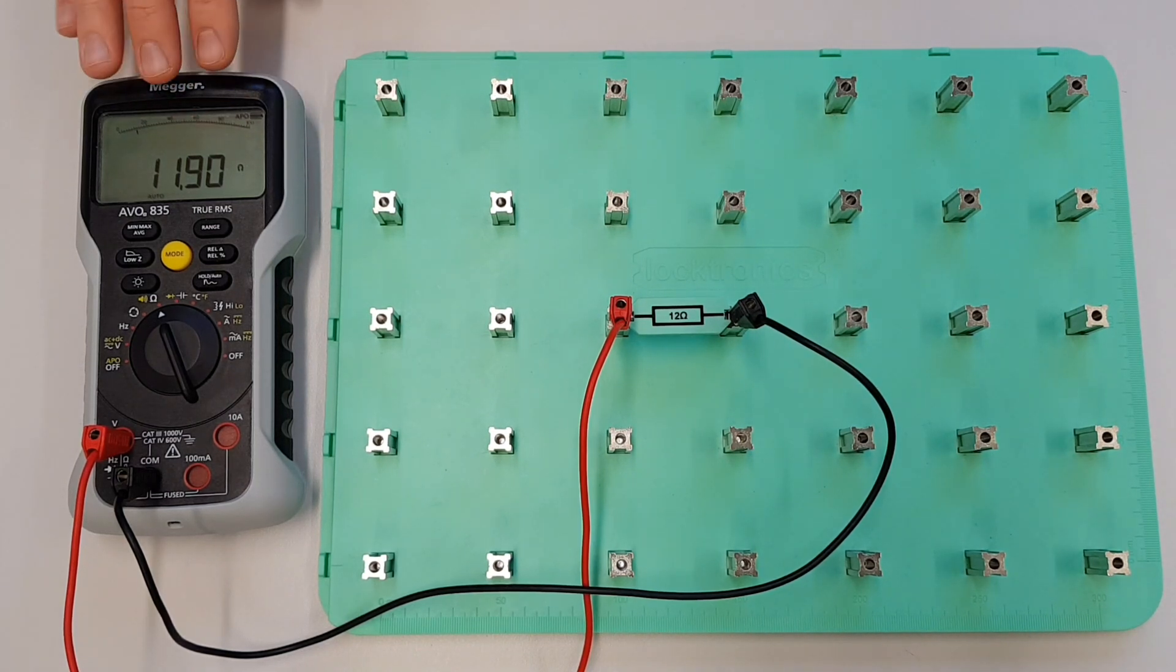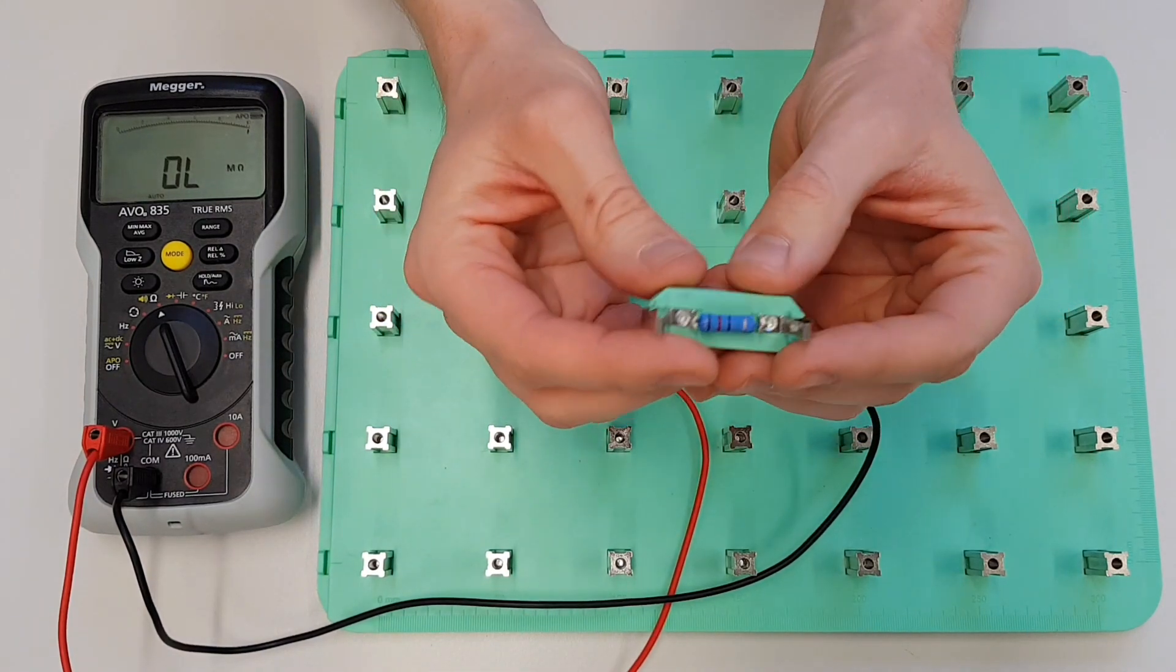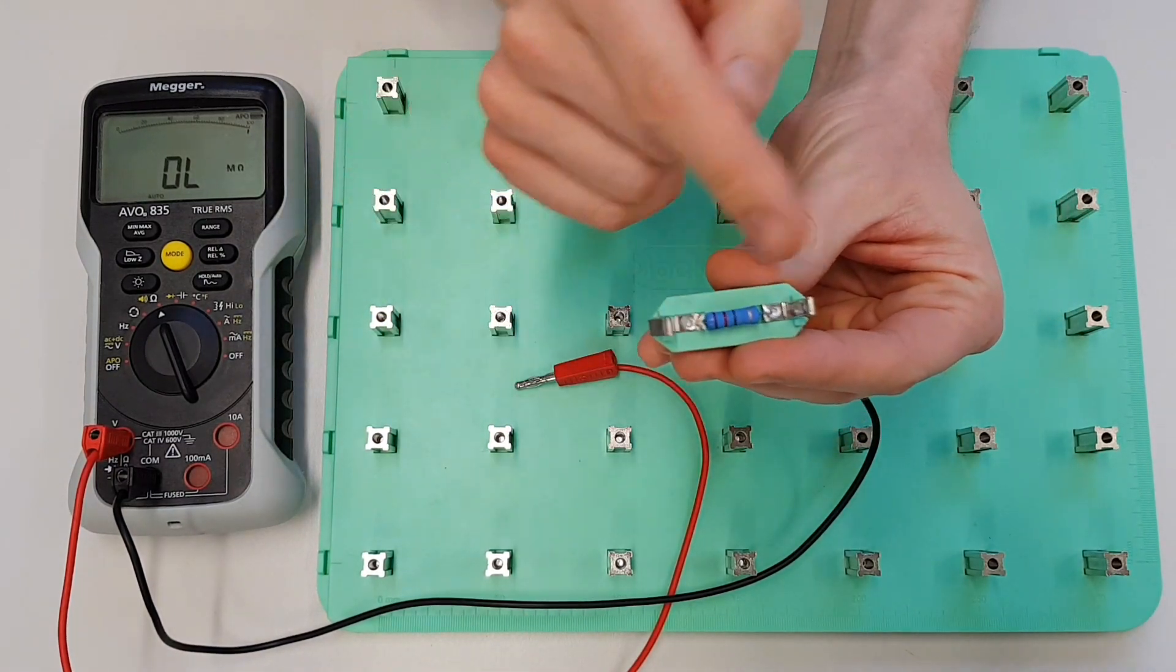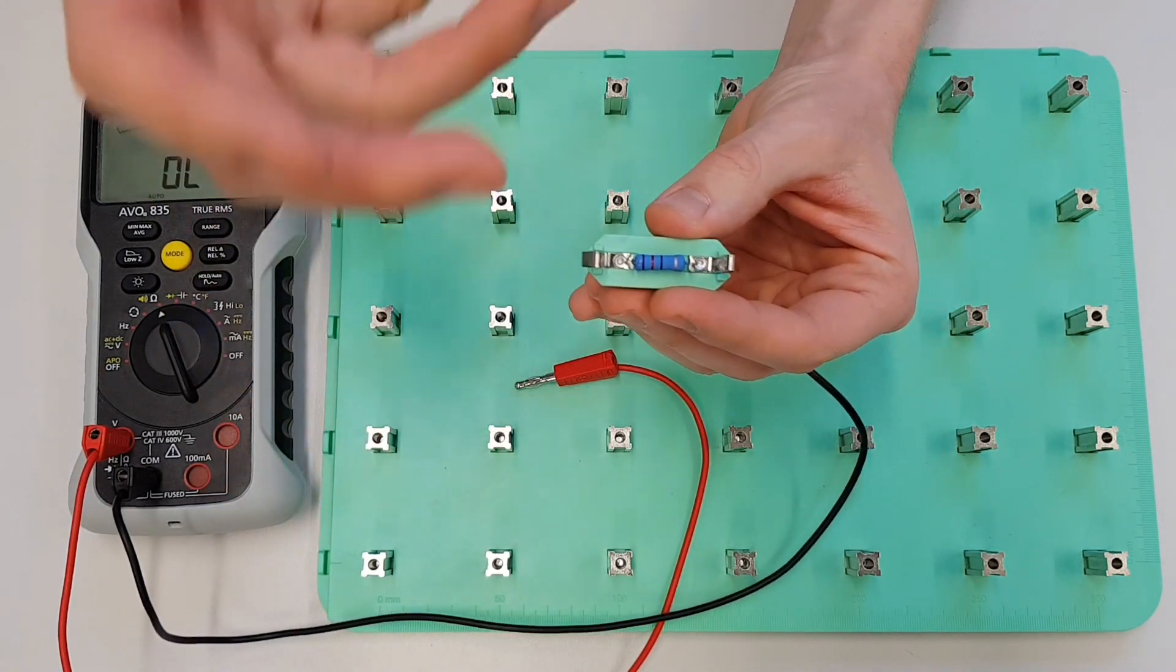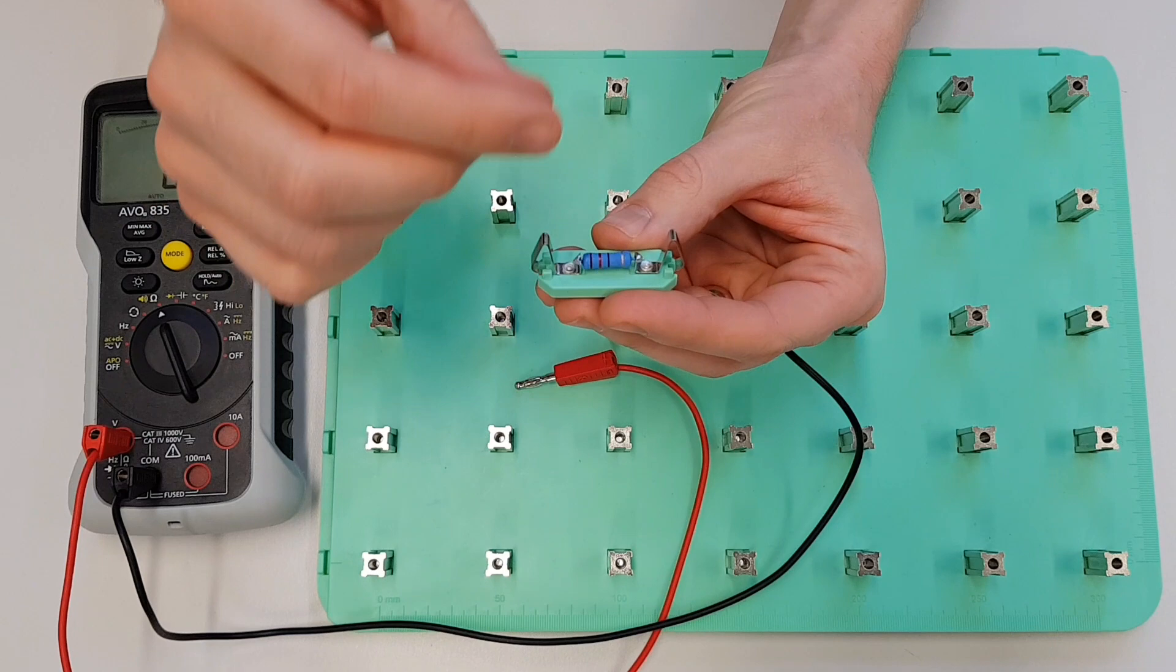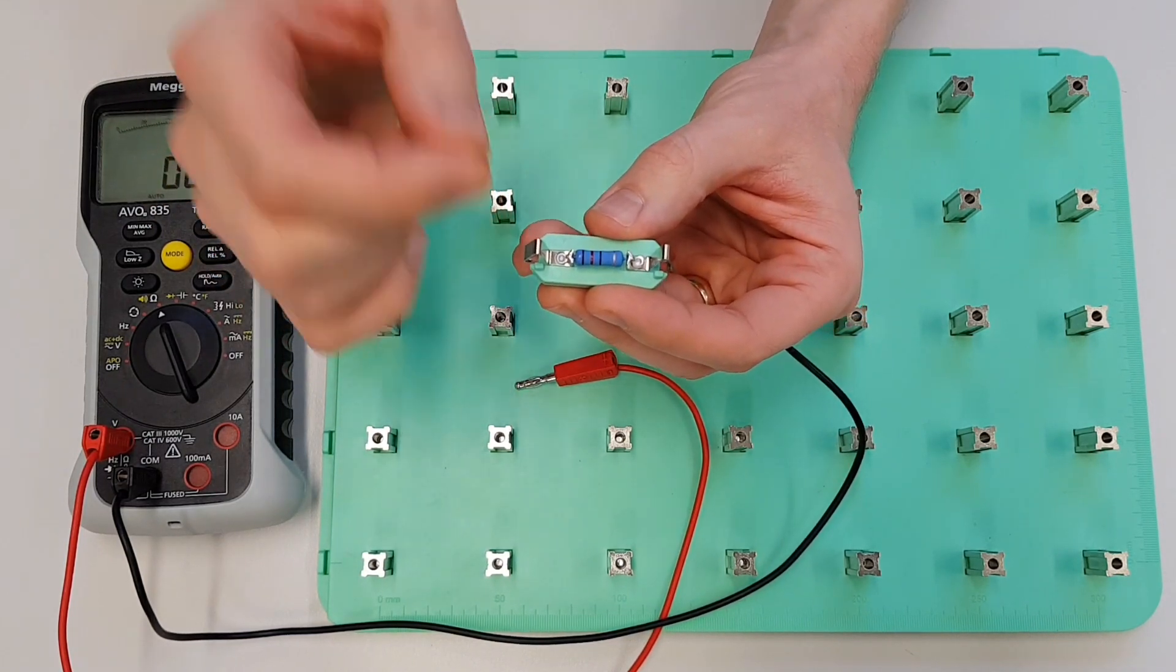Now you may be looking at this reading and thinking, why is that not coming out at exactly 12 ohms? Well, the reason for that, there's a couple of reasons, but the main one is that when we look at the back of the resistor here, these are manufactured by the million. As they come off a production line, it's very difficult to get every single resistor to have exactly the same value, exactly in this case 12 ohms.